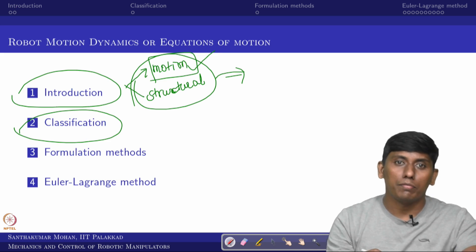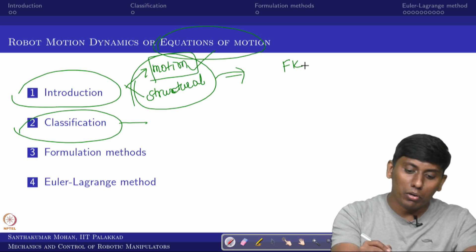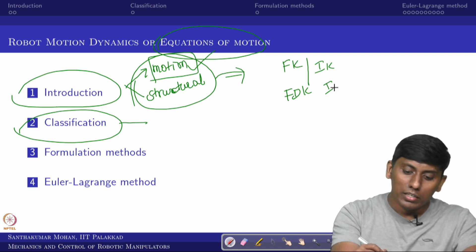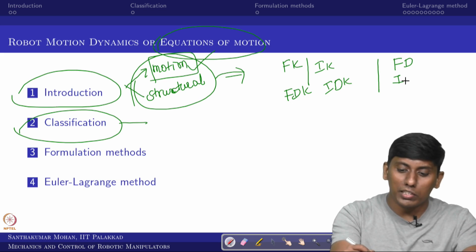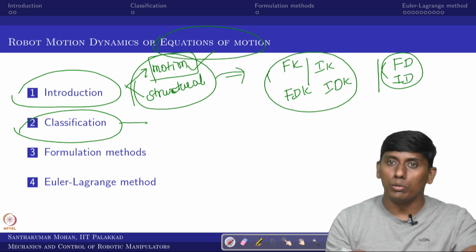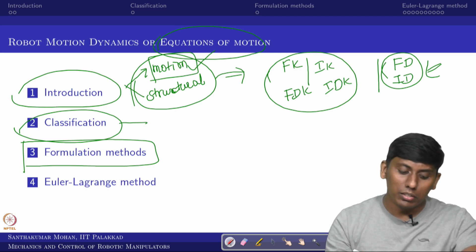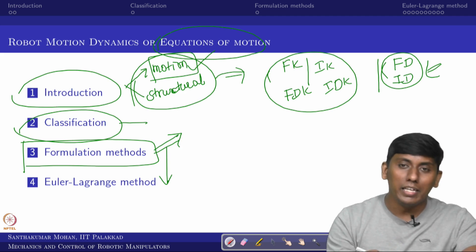This motion dynamics — which some people call the equation of motion — can be classified into two. Just as we had forward and inverse kinematic models, and forward and inverse differential kinematic models, similarly we will talk about forward dynamics and inverse dynamics, though the scenario is not exactly the same. Here it is a mapping between configuration space and operational space, but the spaces involved are different. There are several formulation methods, and we will talk about two popular ones.